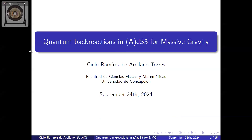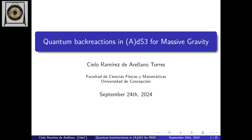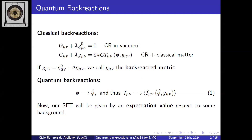Today I will talk about quantum backreactions in AdS3 for massive gravity. First I will tackle what quantum backreactions are and what massive gravity theories are, then combine both. A classical backreaction is what happens when we couple matter to a vacuum field equation — in general relativity, adding matter translates into adding a stress-energy tensor, which corrects the metric. The corrected metric is the backreacted metric.